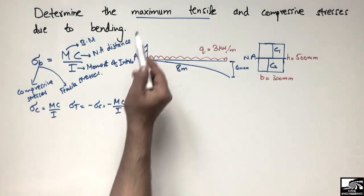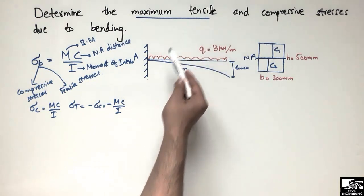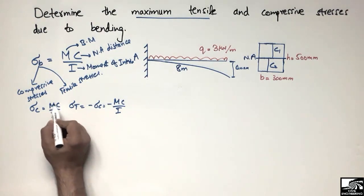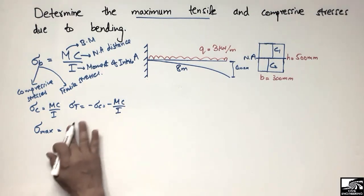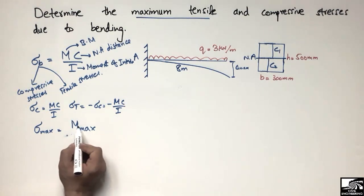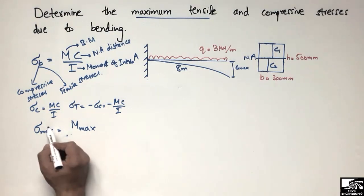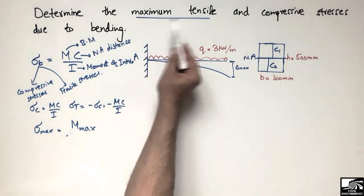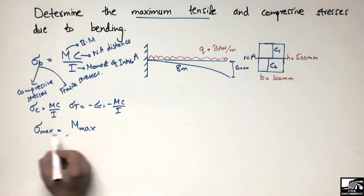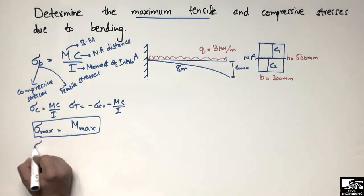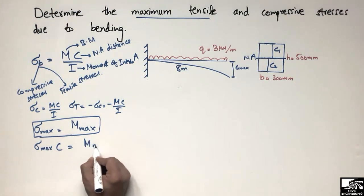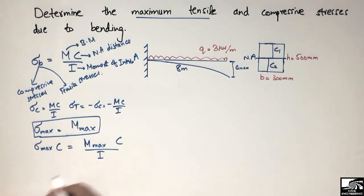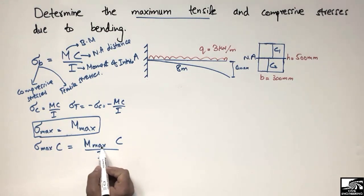The question is to find the maximum tensile stresses. For this we need to find the maximum bending moment, because maximum stress corresponds to the maximum bending moment — the stress depends upon the moment. So the formula for maximum compressive stress is σ_max_c = M_max × c / I.